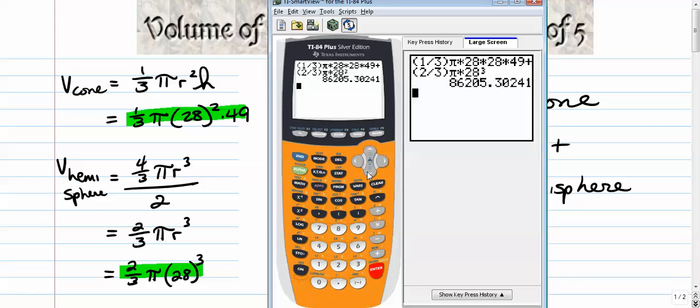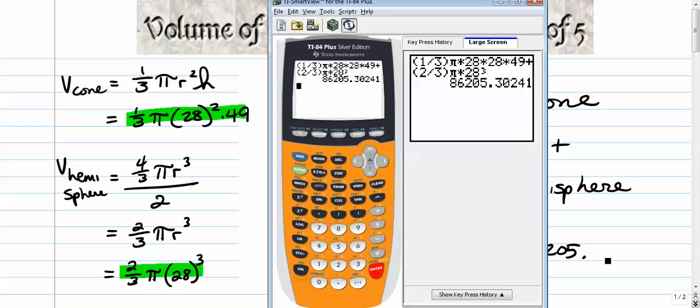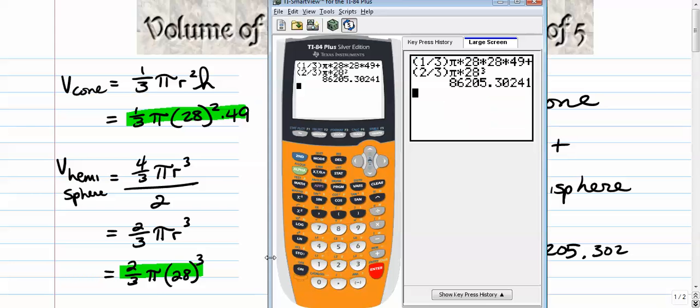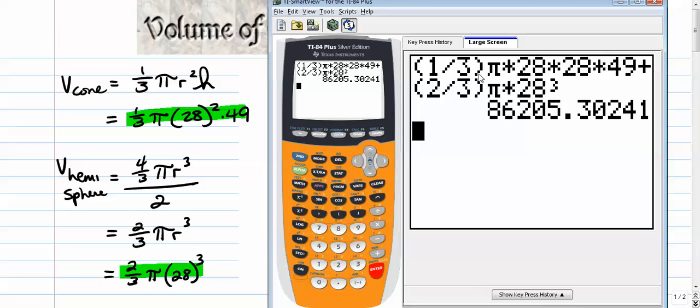86205 is what I got. And let's see. 86205. For some reason it doesn't seem right. Let me check it again. Let me see if I made any mistakes here. Radius, 1 third pi r squared times h, plus 2 thirds pi times h. Yeah, looks good.